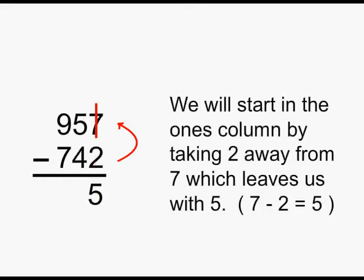We will start in the ones column by taking 2 away from 7, which leaves us with 5. 7 minus 2 is 5.